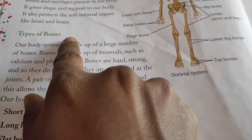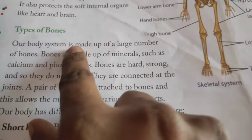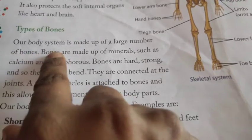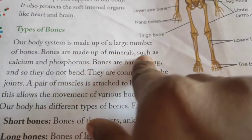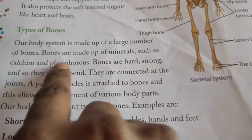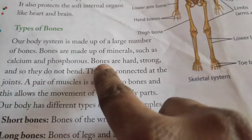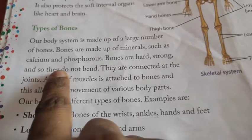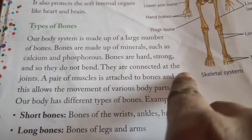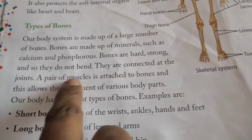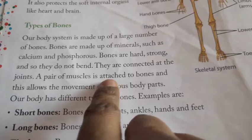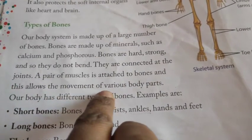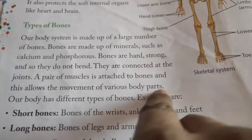Our body system is made up of a large number of bones. Bones are made up of minerals such as calcium and phosphorus. Bones are hard, strong and so they do not bend. They are connected at the joints. A pair of muscles is attached to bones and this allows the movement of various body parts.